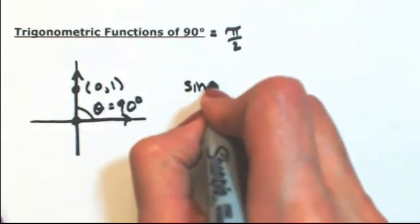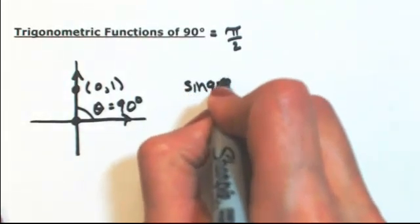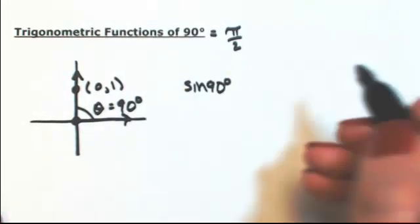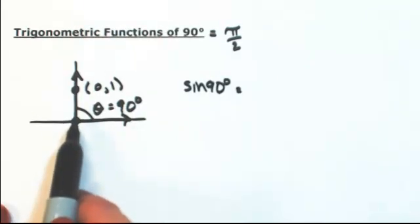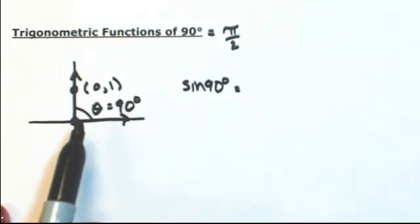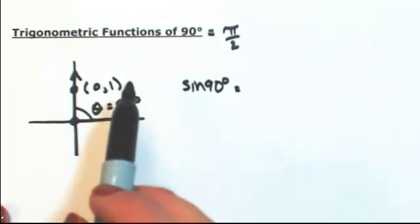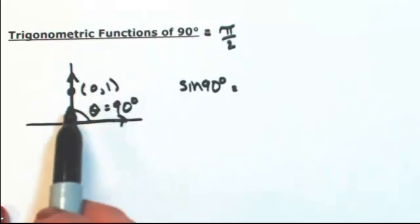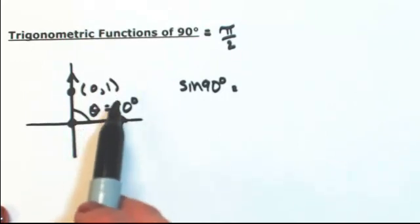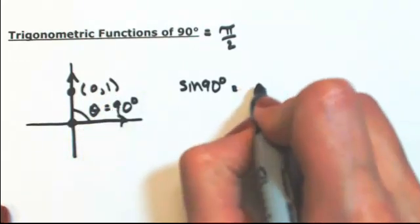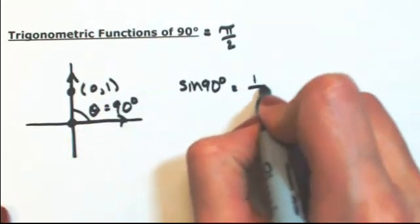So then the sine of 90 degrees, or sine of pi over 2, is going to be the opposite over hypotenuse. The hypotenuse is just going to be 1, and the opposite is also just 1. So that's 1 over 1, which equals 1.